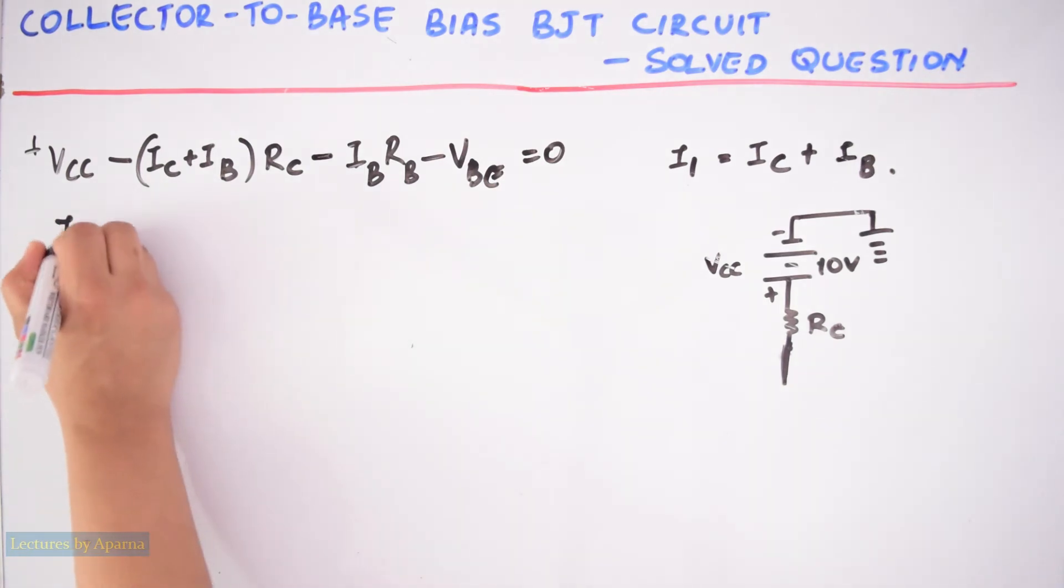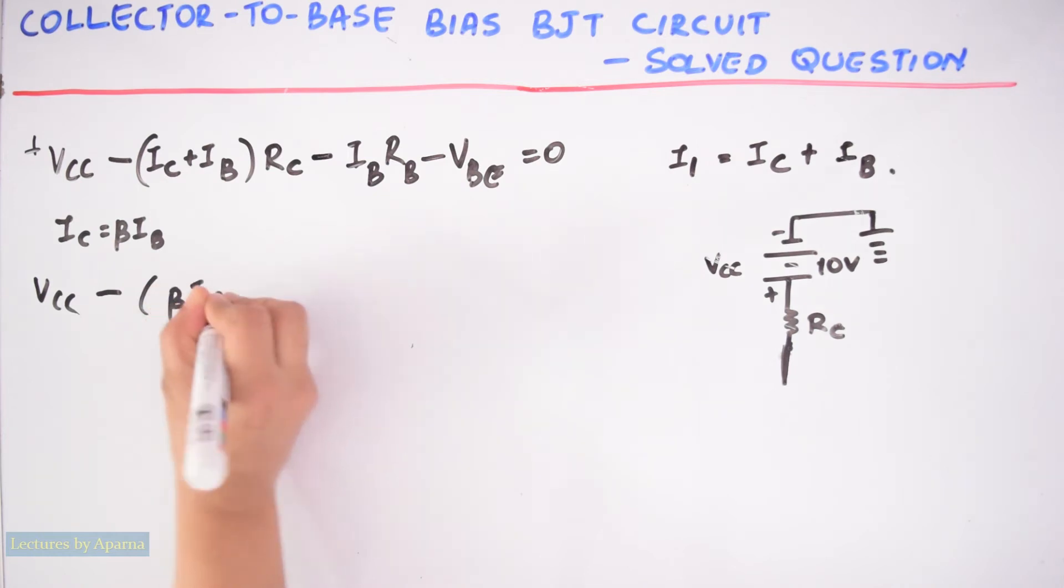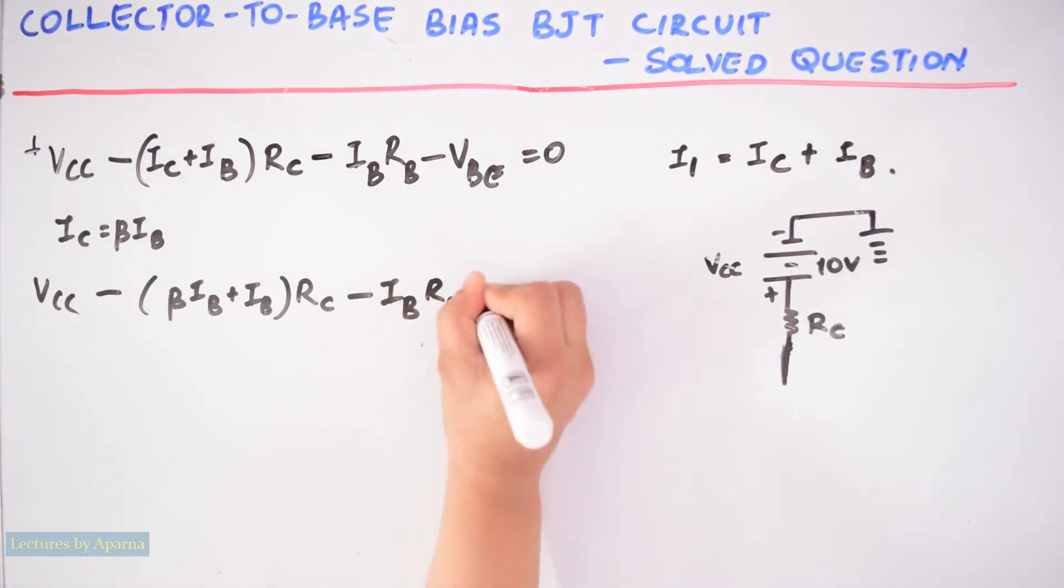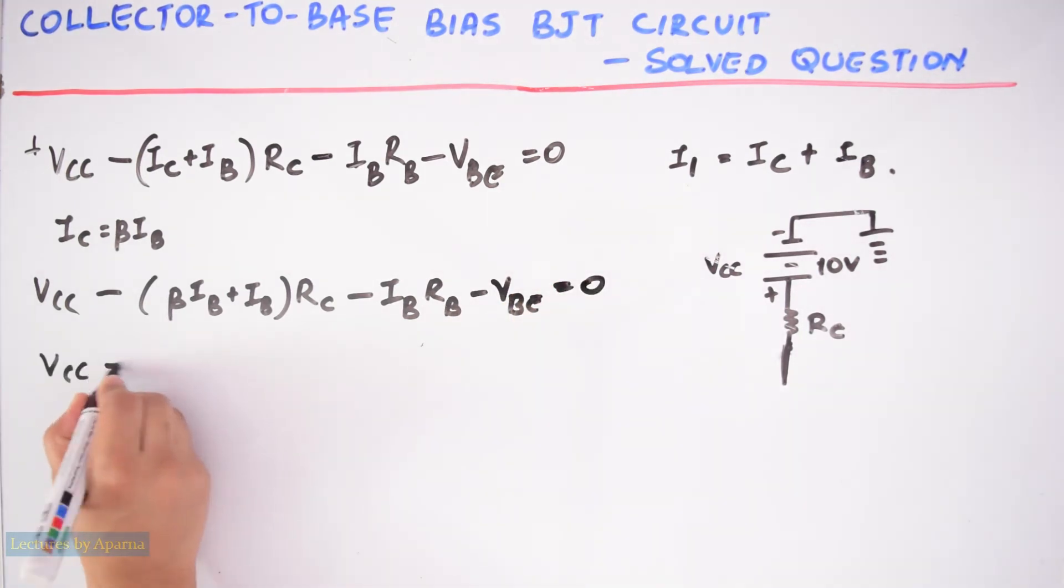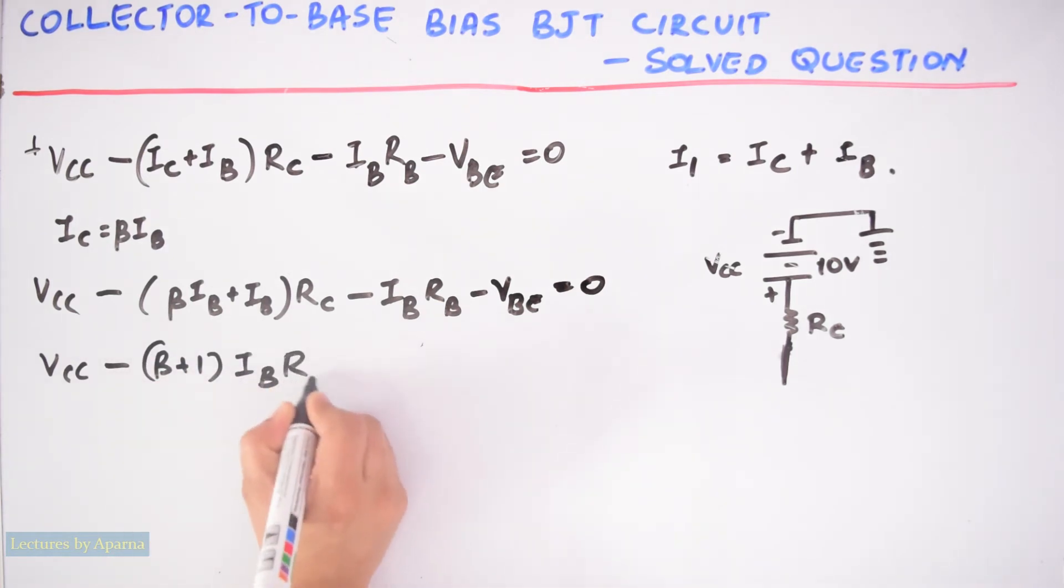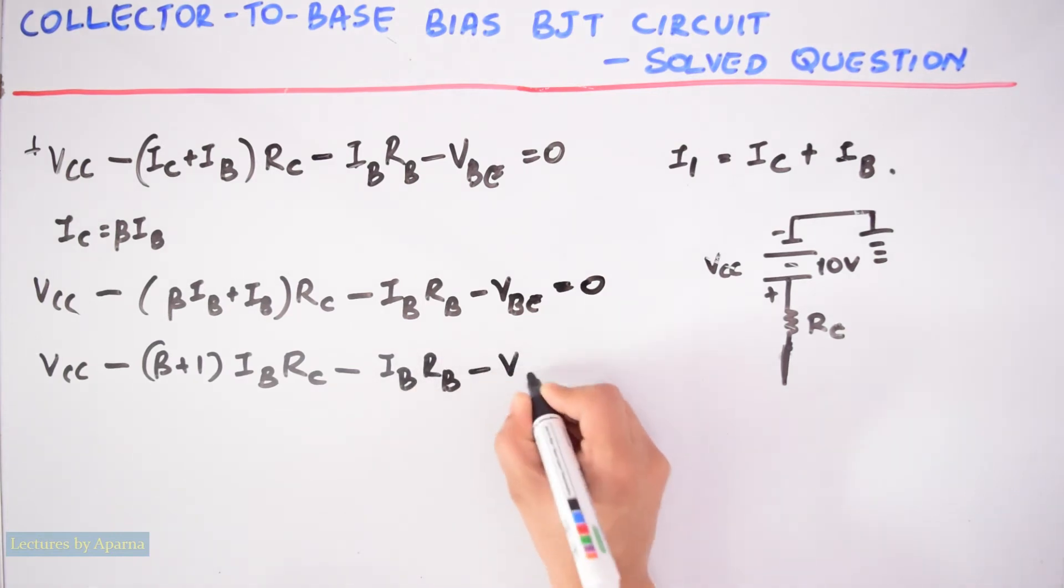Now put IC. VCC minus (beta plus 1) into IB times RC minus IBRB minus VBE is equal to 0.